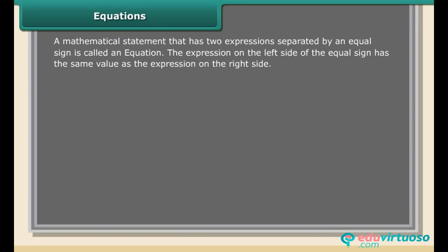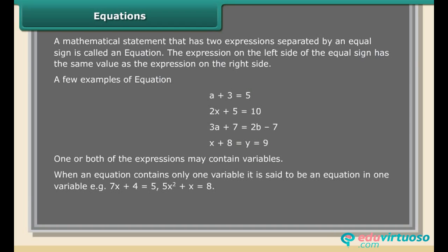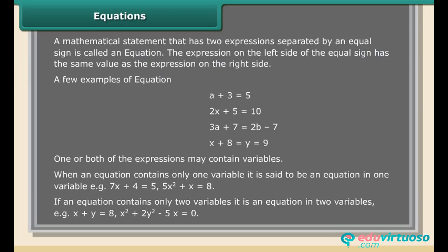A mathematical statement that has two expressions separated by an equal sign is called an equation. The expression on the left side of the equal sign has the same value as the expression on the right side. One or both expressions may contain variables. When an equation contains only one variable, it is an equation in one variable — for example, 7x + 4 = 5, or 5x² + x = 8. If it contains two variables, it is an equation in two variables — for example, x + y = 8, or x² + 2y² − 5x = 0.